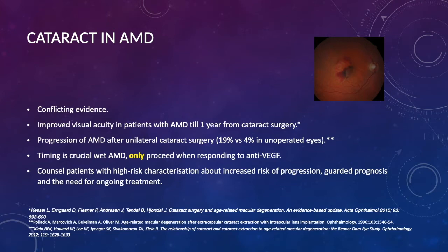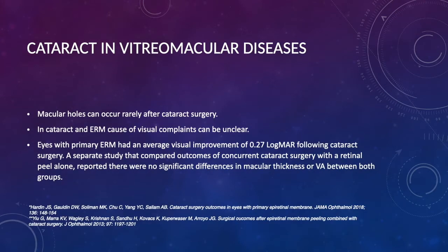Timing with AMD is very critical, and only when we achieve control of the choroidal neovascular membranes is the time that we start considering doing the cataract surgery. We also have to counsel the patient regarding the prognosis, and they will still get their regular treatment for their AMD even after the cataract surgery. In the setting of vitromacular diseases and in the case of an epiretinal membrane, it is in many cases very difficult to know what the visual complaint is in patients, and the prognosis after surgery can be uncertain. A study comparing concurrent cataract surgery with retinal peeling alone reported no significant differences in macular thickness or visual acuity.